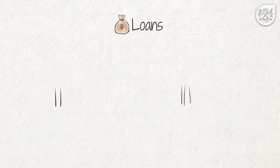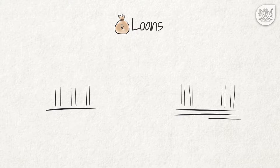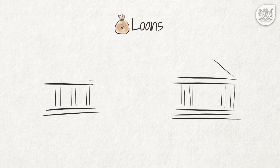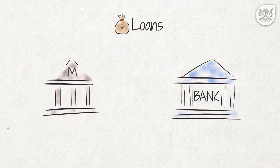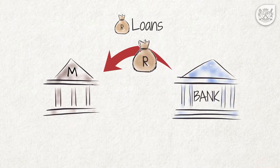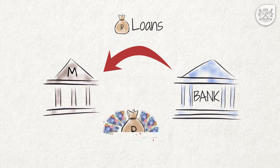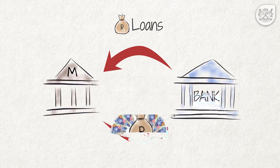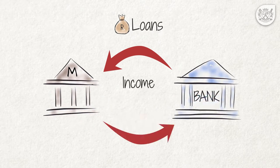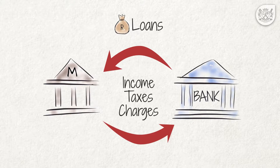Loans. Often, the MIG funds are not sufficient to pay all the construction costs. Municipalities then have to borrow money from a bank. The municipality has to repay this loan plus the interest thereon from its income from taxes and charges.